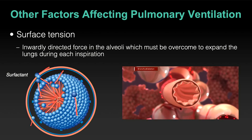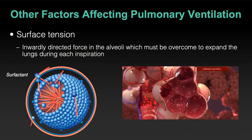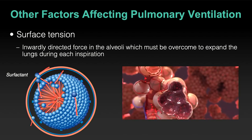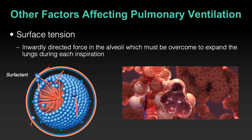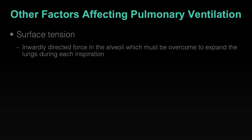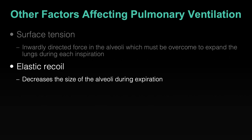Surfactant prevents the collapse of the alveoli, which is really good, because it's very hard to reinflate them if they collapse. So they never fully collapse, they never close, because of surfactant. It's more of a layer. Surfactant largely decreases surface tension, which will help to alleviate some of the elastic recoil in the lungs.